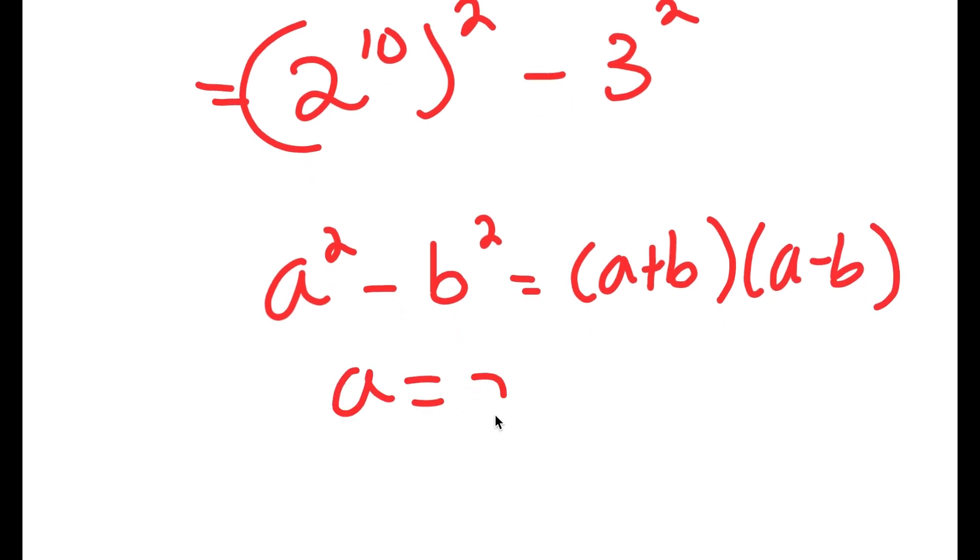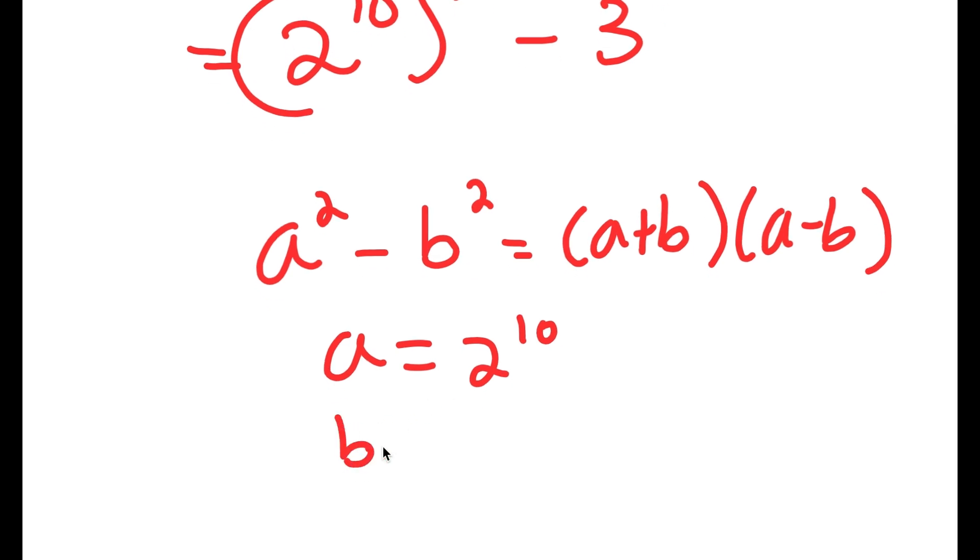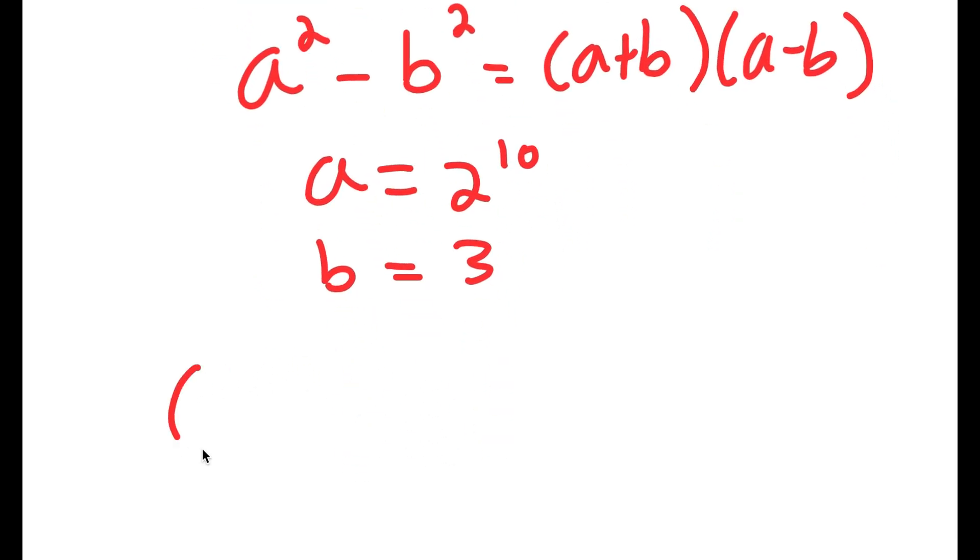So in this case, a is 2 to the power of 10 and b is 3. So I get 2 to the power of 10 plus 3 times 2 to the power of 10 minus 3.